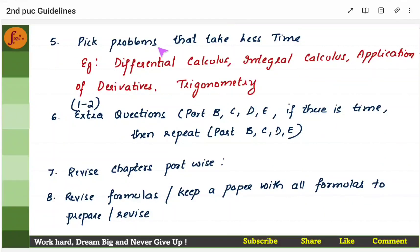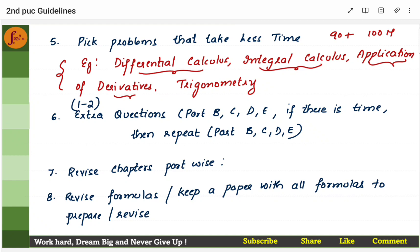Pick problems that take less time. If you want to score 90-plus marks, you would have prepared for more than 100 marks worth of content. For those students, it's better to attempt calculus first — application of derivatives, trigonometry — because these questions take lesser time; the number of steps is fewer and you will get the answer quickly. After attempting these, then go to extra questions.